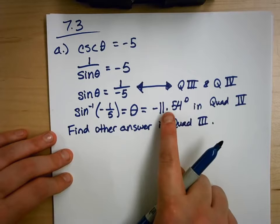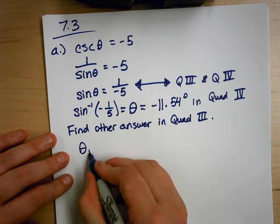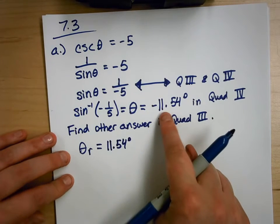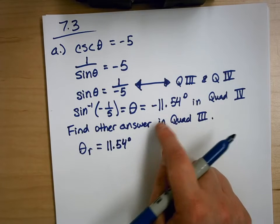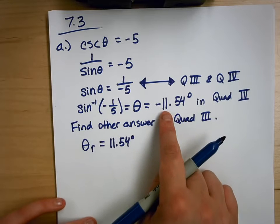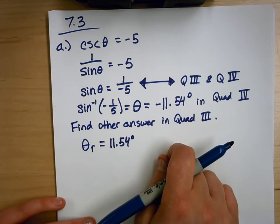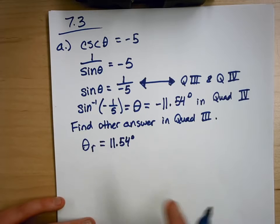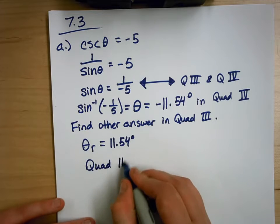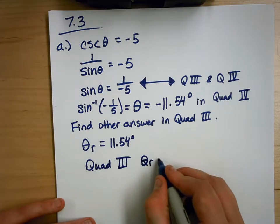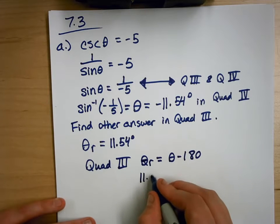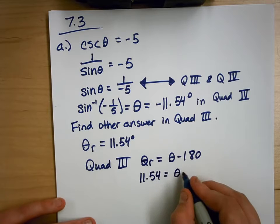To find that, I need to find the reference angle, and the reference angle is going to be 11.54 degrees. Because the absolute value of this angle is less than 90, I can just take the absolute value to get my reference angle. Now that I have the reference angle, I can use the formula: in quadrant 3, the reference angle equals theta minus 180.